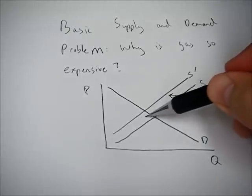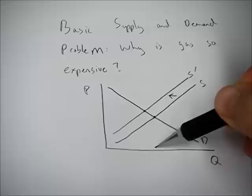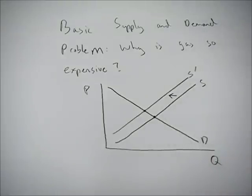So this alone would result in higher prices. You can see the price level going up and the quantity, the equilibrium quantity, going down.